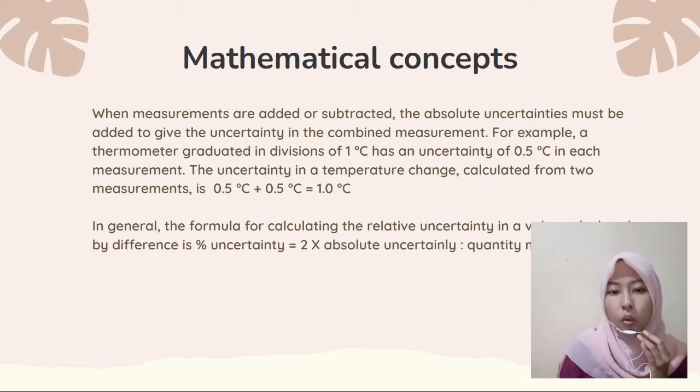In mathematical concepts, when measurements are added or subtracted, the absolute uncertainties must be added to give the uncertainty in the combined measurement. For example, a thermometer graduated in divisions of 1°C has an uncertainty of 0.5°C in each measurement. The uncertainty in a temperature change calculated from two measurements is 0.5°C + 0.5°C = 1.0°C.